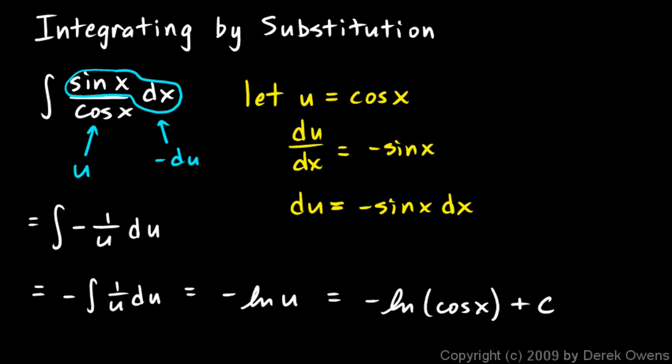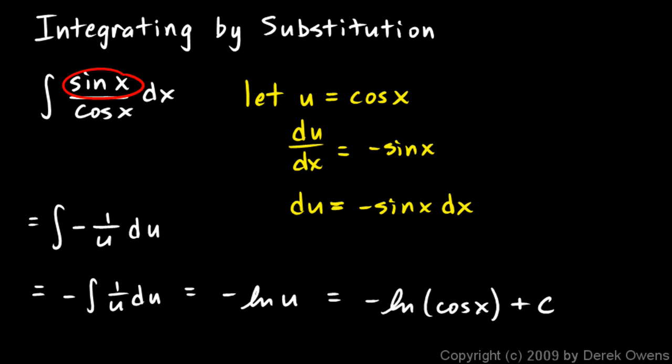I should put in my plus C, and that's my answer. Now here's the clue that a substitution is a good way to go: if I look back at my original integral, I notice that I have one function and its derivative together. I have cosine and its derivative is sine — with a constant multiplier, in this case negative one — along with the dx. Having one function and its derivative together in the integrand is the clue that substitution will be a handy approach.